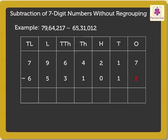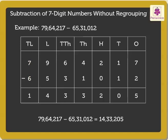7 minus 2 equals 5. Next, 1 minus 1 is equal to 0. Now, 2 minus 0 gives 2. 4 minus 1 equals 3. 6 minus 3 is equal to 3. Next, 9 minus 5 gives 4. Finally, 7 minus 6 equals 1. Hence, the difference of 79,64,217 and 65,31,012 is 14,33,205.